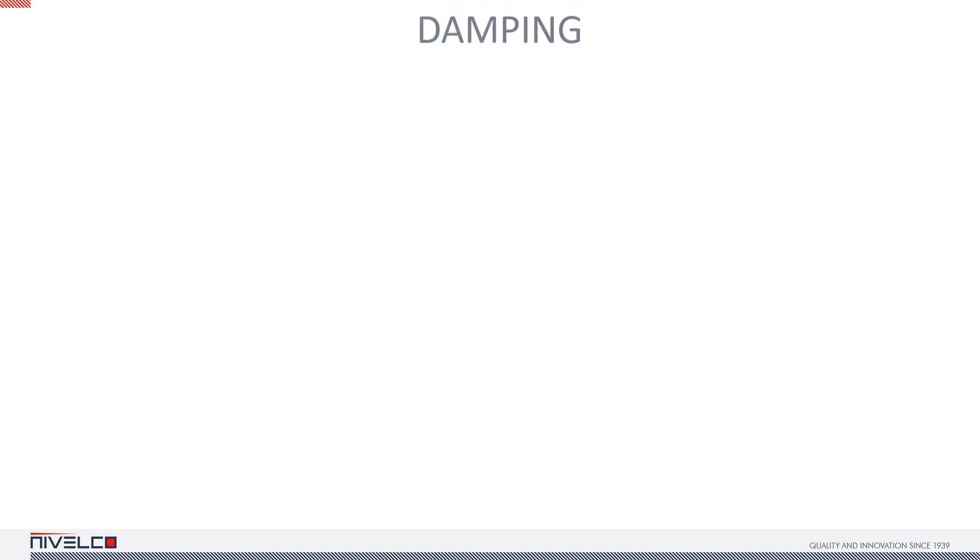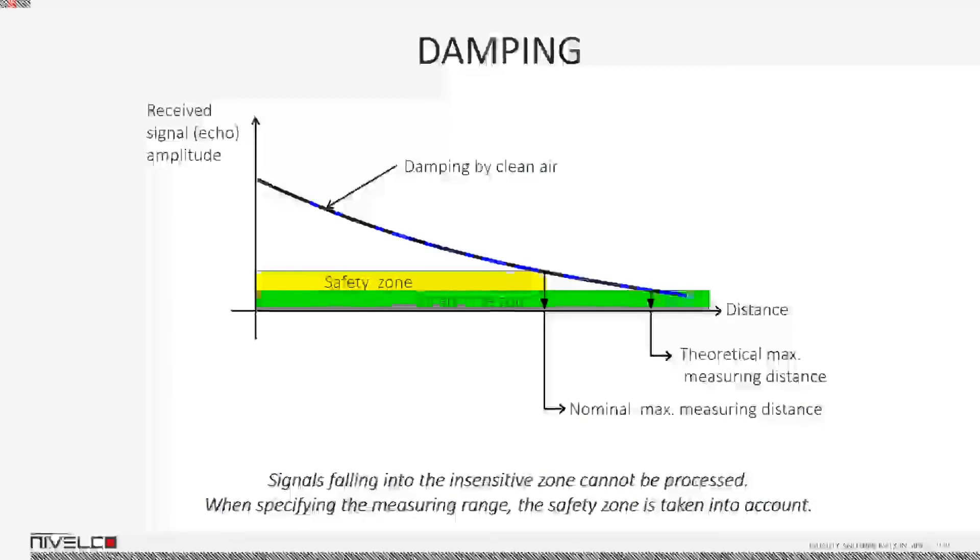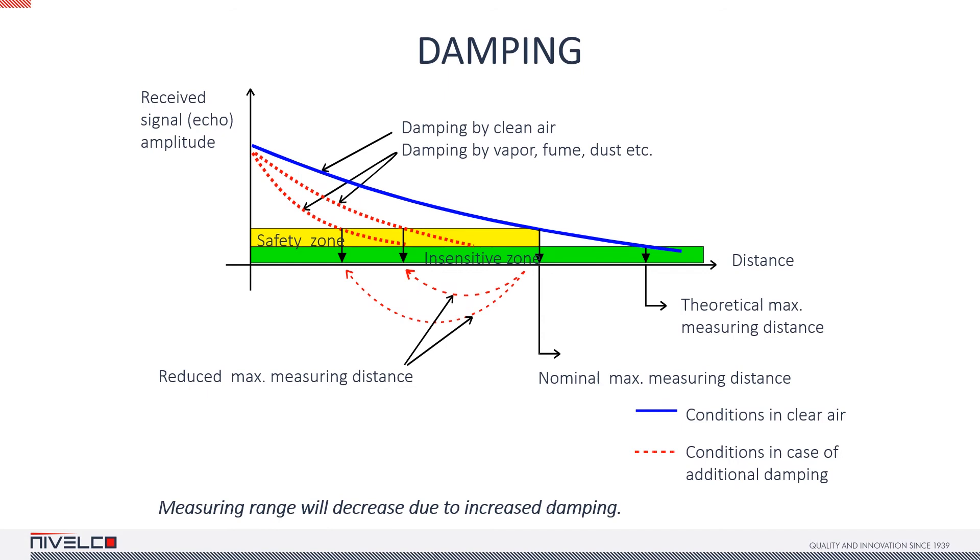The blue curve in this diagram illustrates the signal dampened by clean air, and the green line is the insensitive zone where the echo is so weak that the device is unable to catch it. The theoretical maximum measuring distance of a device is where the echo level first hits the insensitive zone. The safety zone is in which the device can measure reliably and whose maximum we call the nominal measuring range. Additional damping factors may reduce the device's maximum measuring range. Therefore, it is vital to know the physical properties of the measuring medium and the environment before purchasing a system.